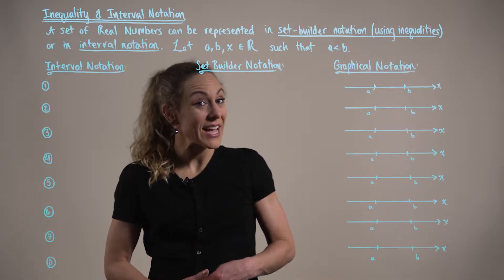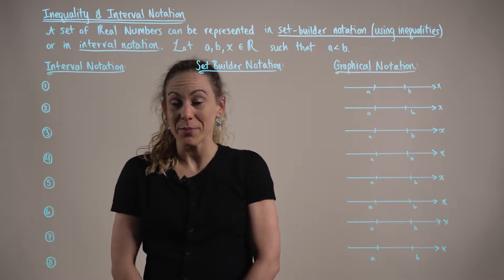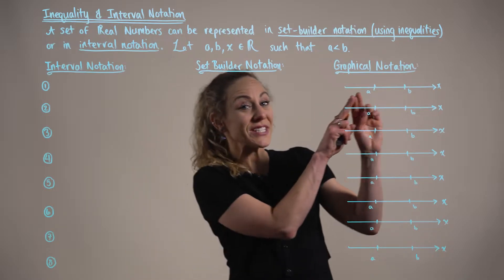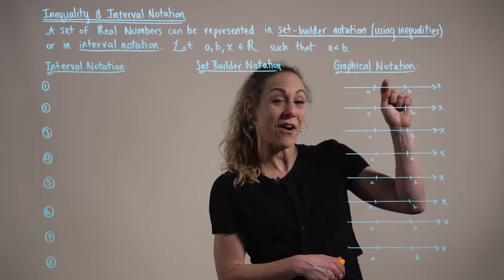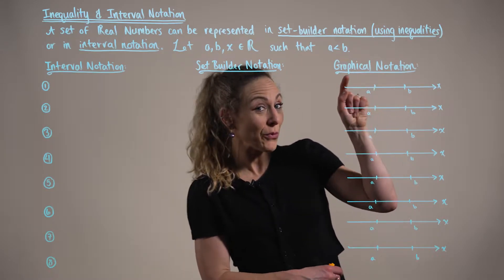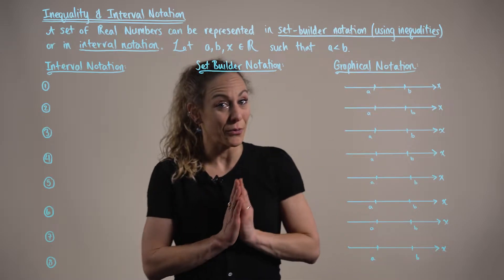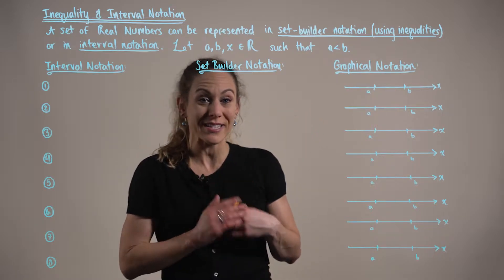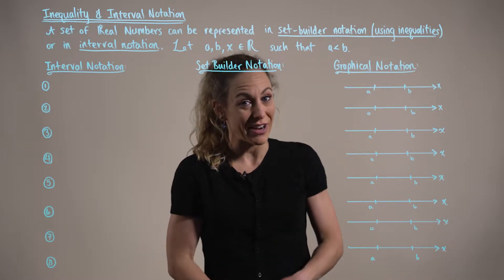Here we are exploring inequality and interval notations for sets of real numbers. All real numbers can be located on a number line or on the x-axis, which extends infinitely to the left and to the right. As we move to the right we move in an infinitely positive direction, and as we move to the left we move in the infinitely negative direction. Sets of real numbers can be represented using set builder notation, which incorporates inequalities, interval notation, or graphical notation.